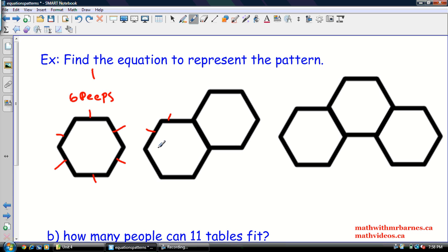At the next table, one, two, three, four, five, six, seven, eight, nine, 10. So table two, we got 10 people. And table three, maybe you can make a guess. One, two, three, four, five, six, seven, eight, nine, 10, 11, 12, 13, 14. We got 14 peeps.